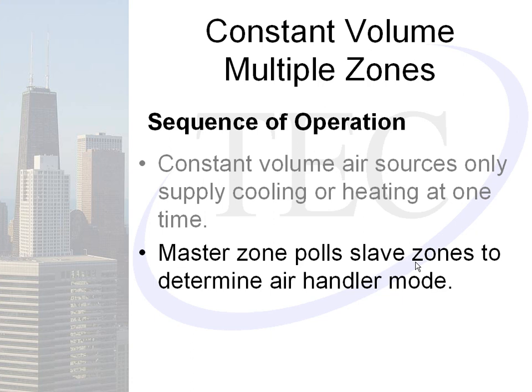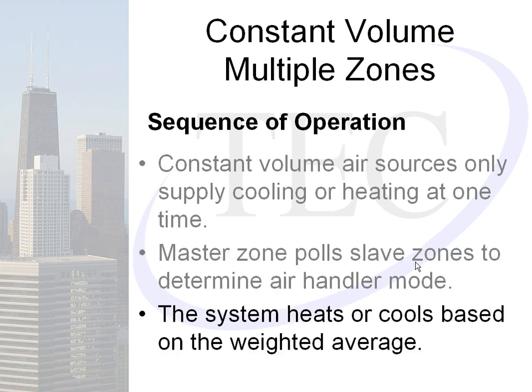The master zone lets the corresponding slave zones know that the rooftop is now in a particular mode. If you need that mode of operation, open your damper; if you do not, close your damper. There is also a bypass damper that regulates static pressure in the duct — more details on the bypass damper to follow.